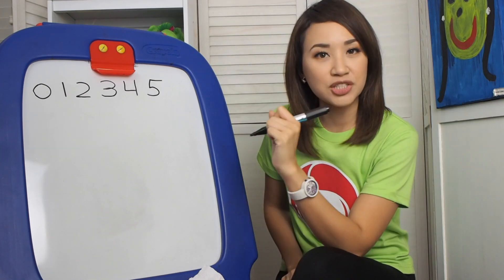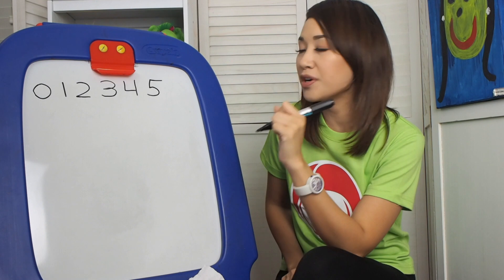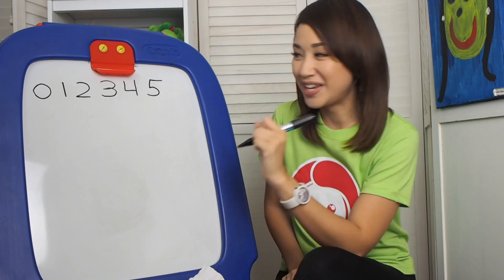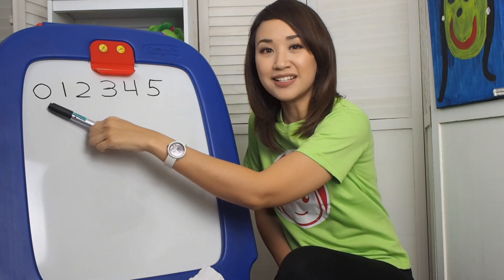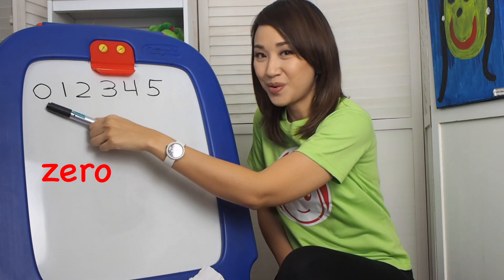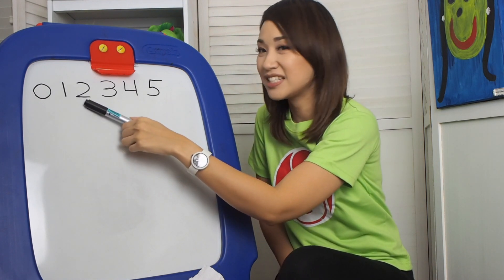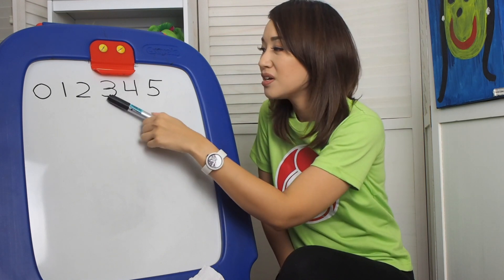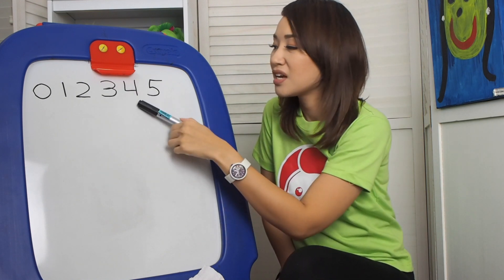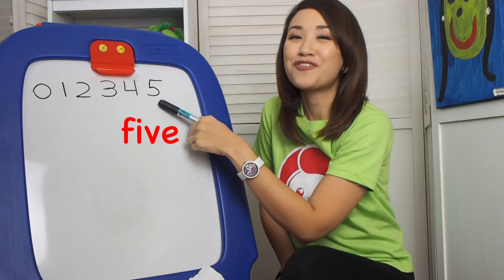Before we start numbers 6 to 10, let's review our numbers from 0 to 5. What number is this again? 0, 1, 2, 3, 4, and 5.